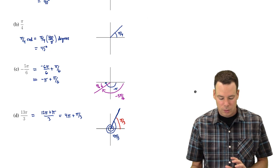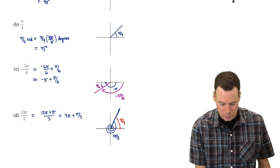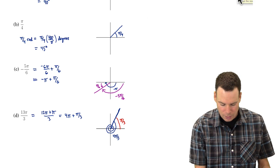Alright, so that's just some quick examples of thinking in terms of radian measure and how to plot the angle.